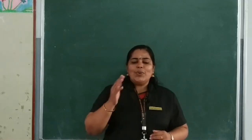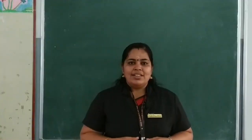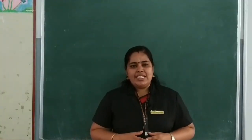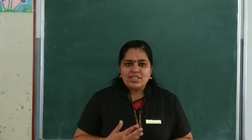Let's see what it is. Now look at this picture. Here you can see a boy is aiming at a fish. But the arrow goes and hits the frog. What may be the reason for this? We will study about this in detail. Before that, let us discuss about some more examples.